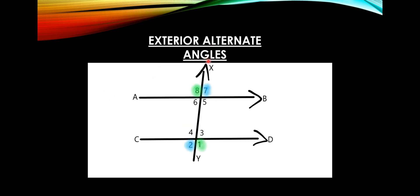The next type is exterior alternate angles. In the exterior part of the two straight lines, if angles are formed on alternate sides of the transversal, they are called exterior alternate angles. Angle 8 and angle 1 are one pair, and angle 7 and angle 2 are another pair of exterior alternate angles.